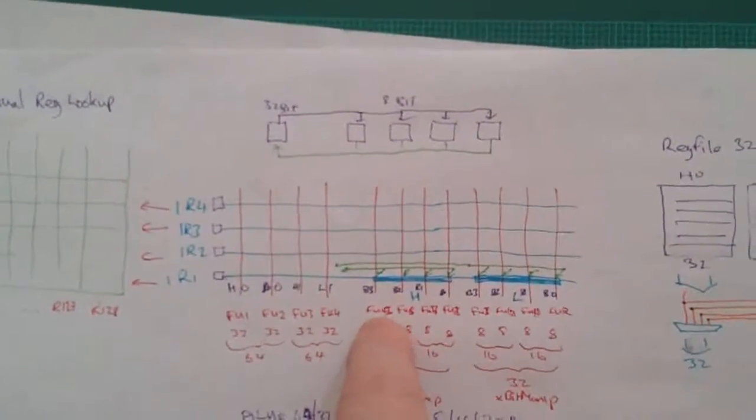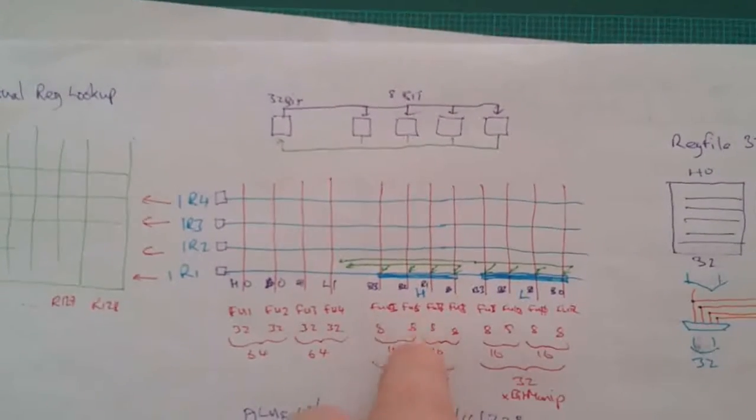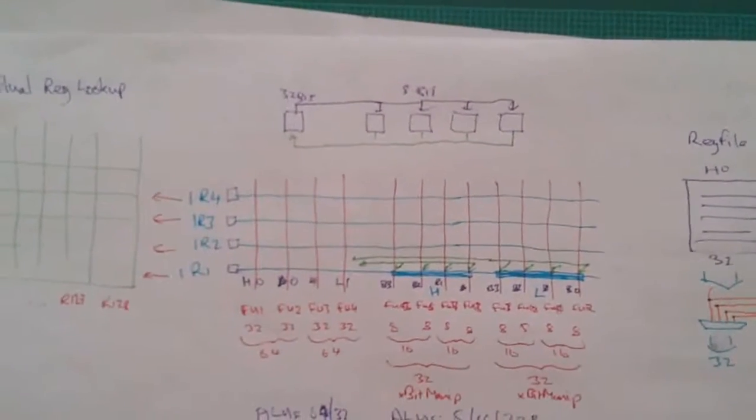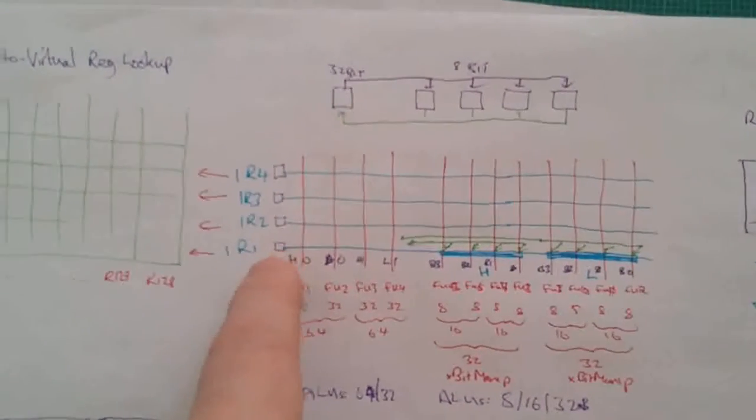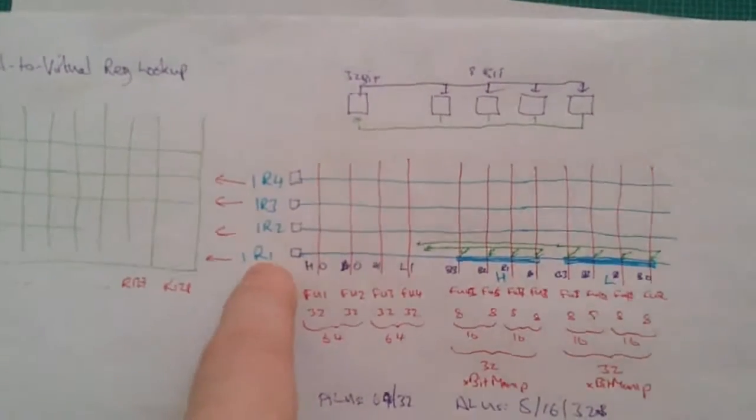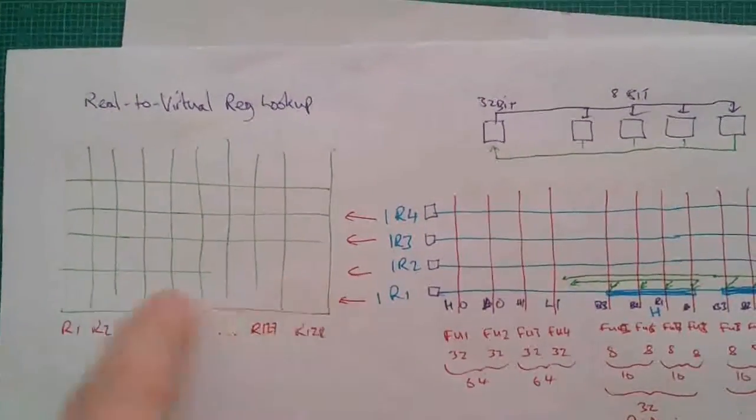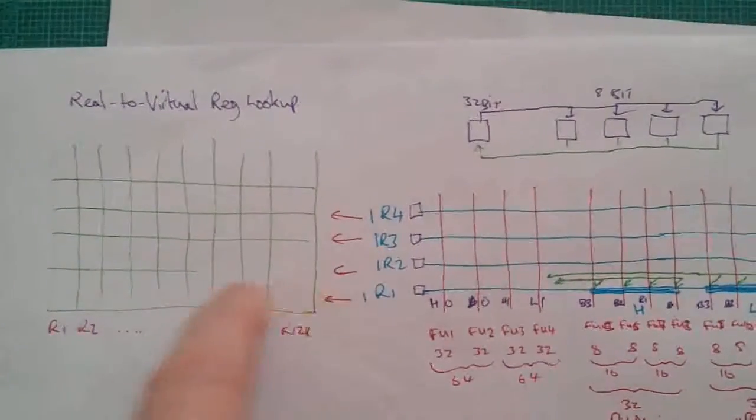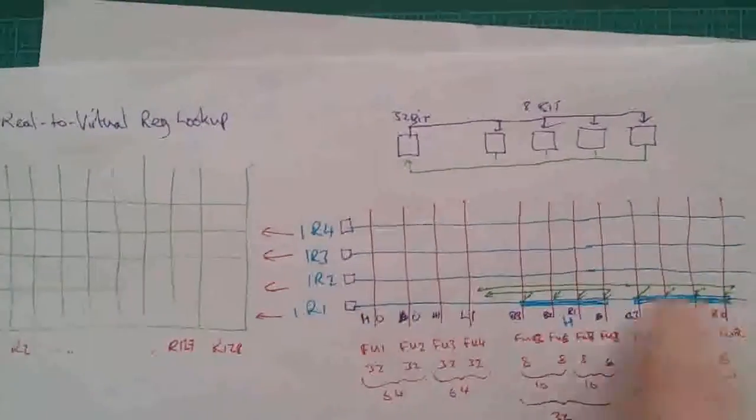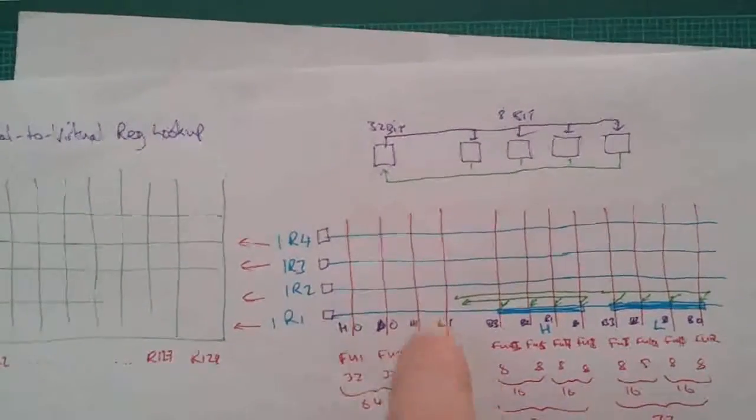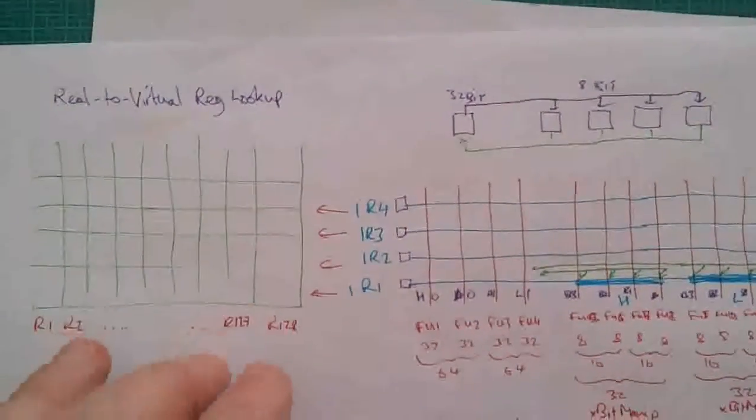Remember, each reservation station, each function unit is synonymous with a reservation station row of the Tomasulo algorithm system. I described this in earlier videos. So we'd have to have an intermediate registry register lookup table. And this will be a one bit exclusive marker set in here to indicate that this register line is in use.